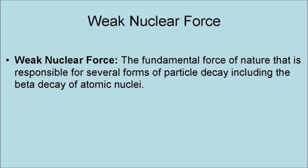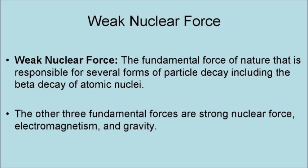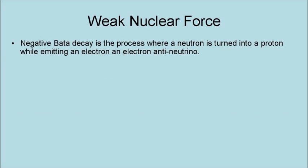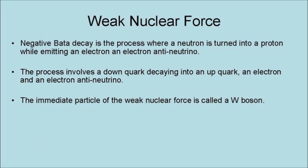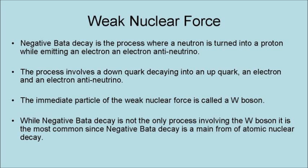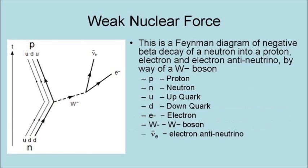The weak nuclear force is the fundamental force in nature that is responsible for several forms of particle decay, including the beta decay of atomic nuclei. The other three fundamental forces are the strong nuclear force, electromagnetism, and gravity. Negative beta decay is the process where a neutron is turned into a proton while emitting an electron and electron-anti-neutrino. This process involves a down quark decaying into an up quark, an electron, and an electron-anti-neutrino. The intermediate particle of the weak nuclear force is called a W-boson. While negative beta decay is not the only process involving the W-boson, it is the most common since negative beta decay is a main form of atomic nuclear decay. This is a Feynman diagram of negative beta decay of a neutron into a proton, an electron, and an electron-anti-neutrino by way of a W-boson.